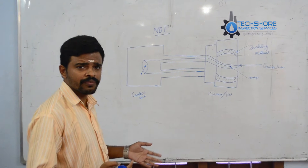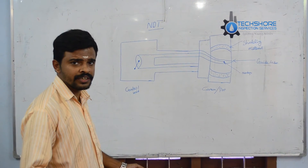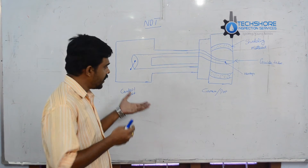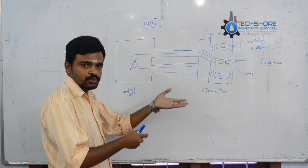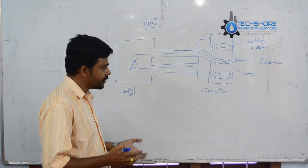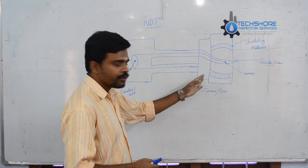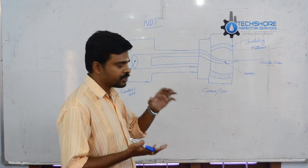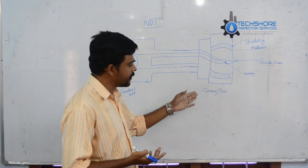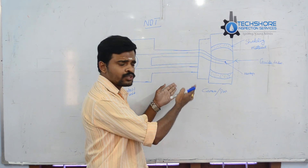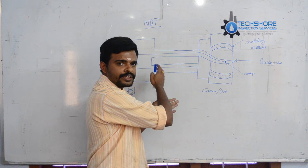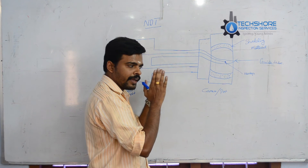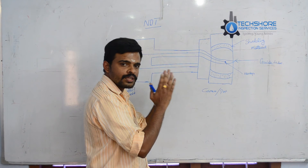The purpose of each unit: the control unit is controlling all the area — where we have to guide the guide tube or where we have to expose the isotope. In the camera unit, one isotope is equipped within the camera or port, and the control unit is used to control the exposure of the isotope to the area where we have to do the NDT.